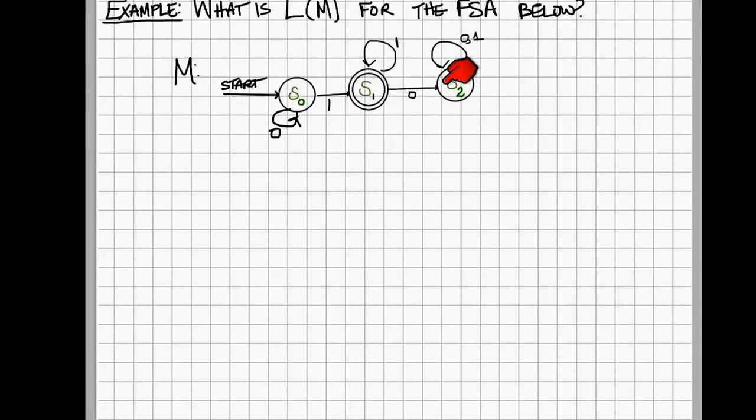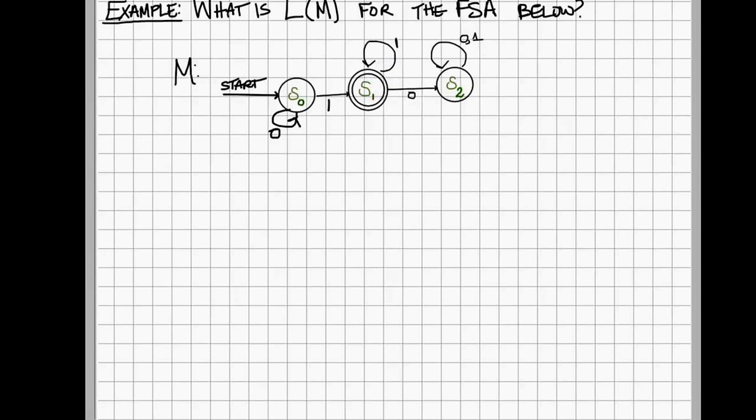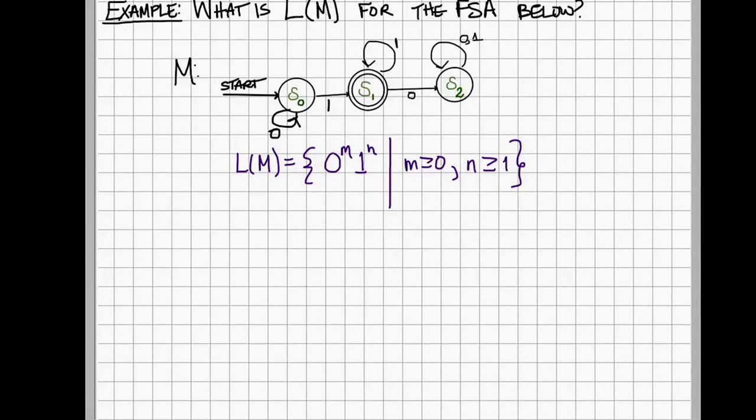So the only way to terminate here in S1 is if you start with any number of 0s, followed by at least one 1 and any number of 1s. The way you can represent this is the language of the machine is a string 0 to the m,